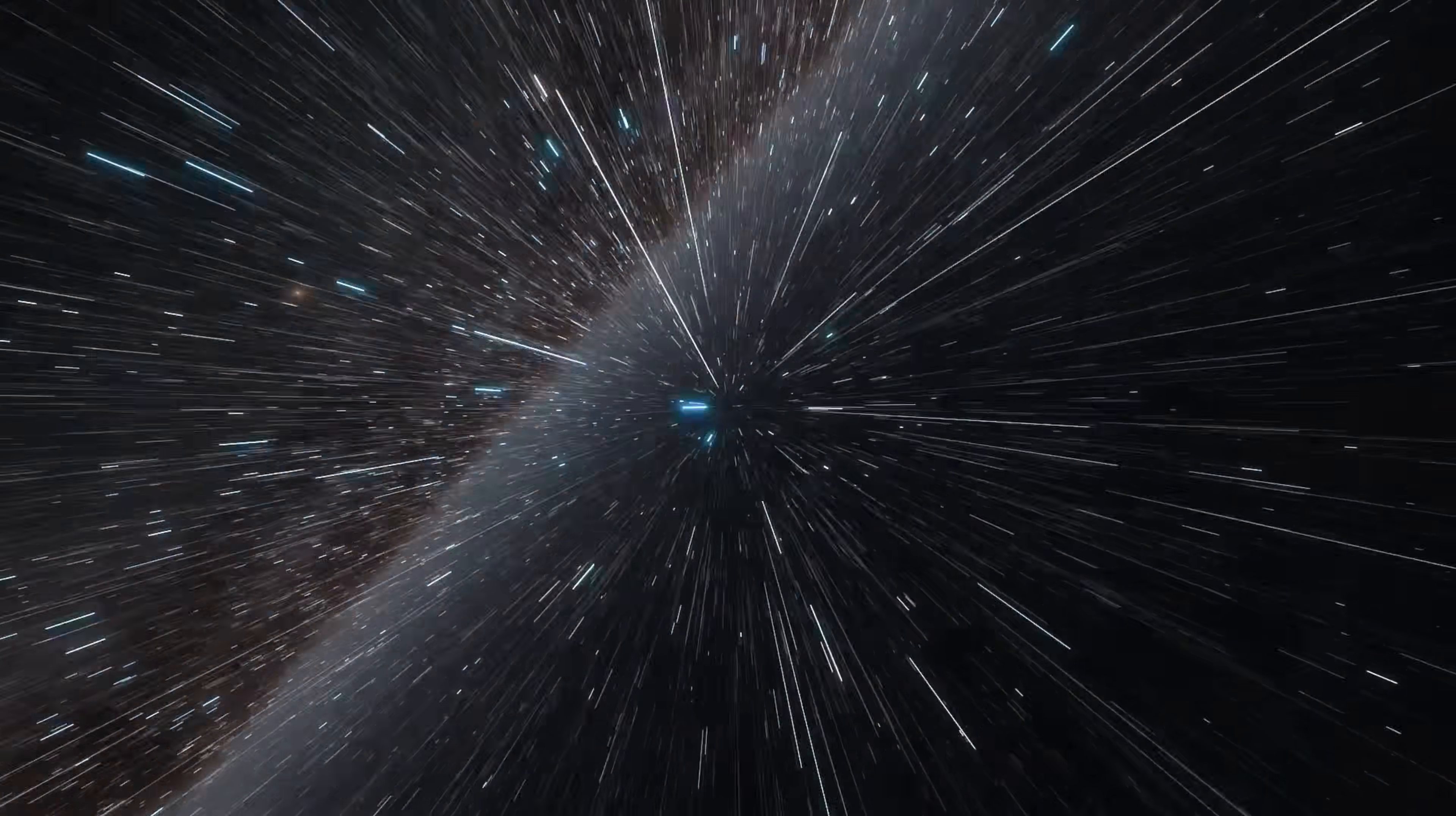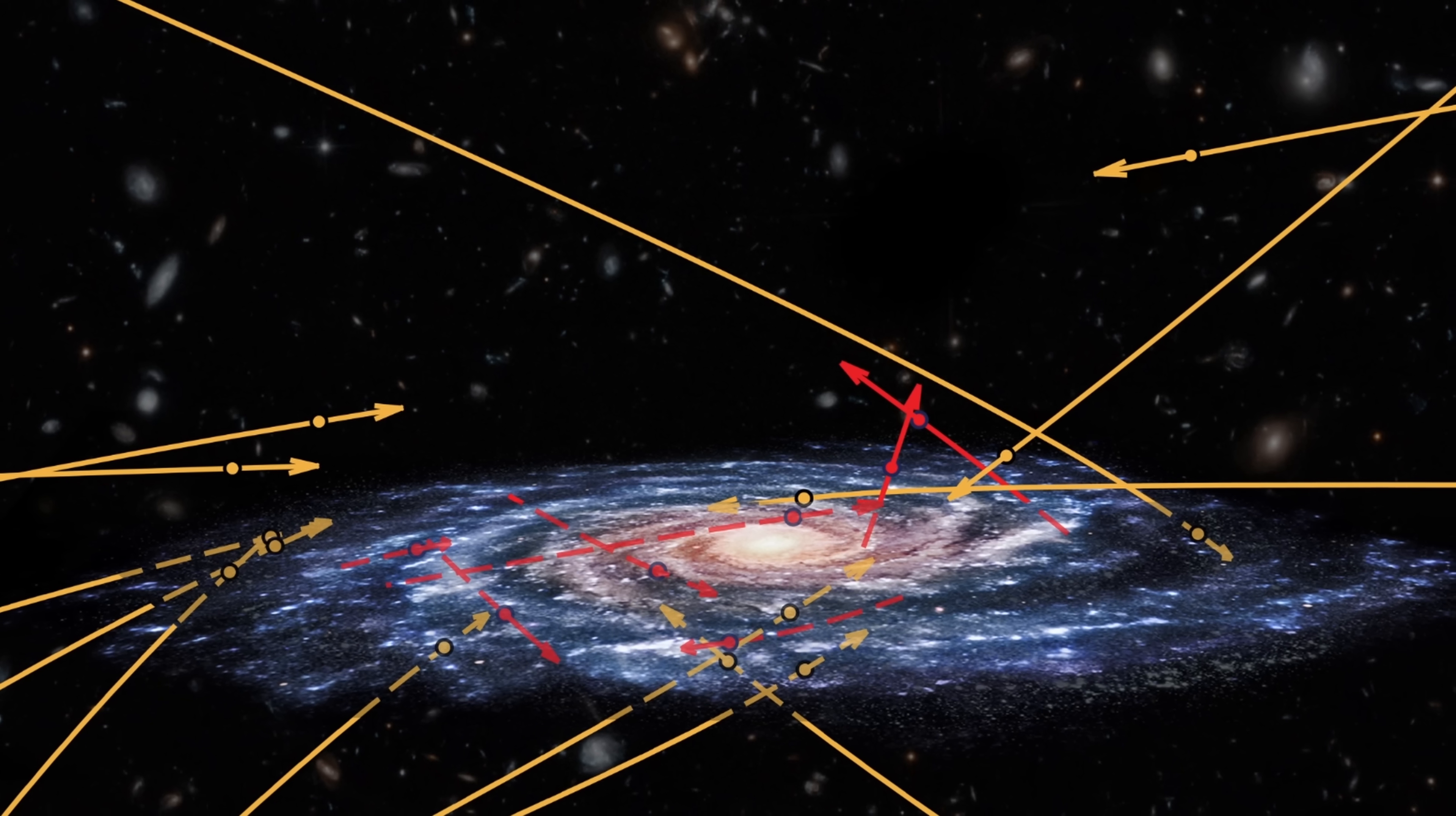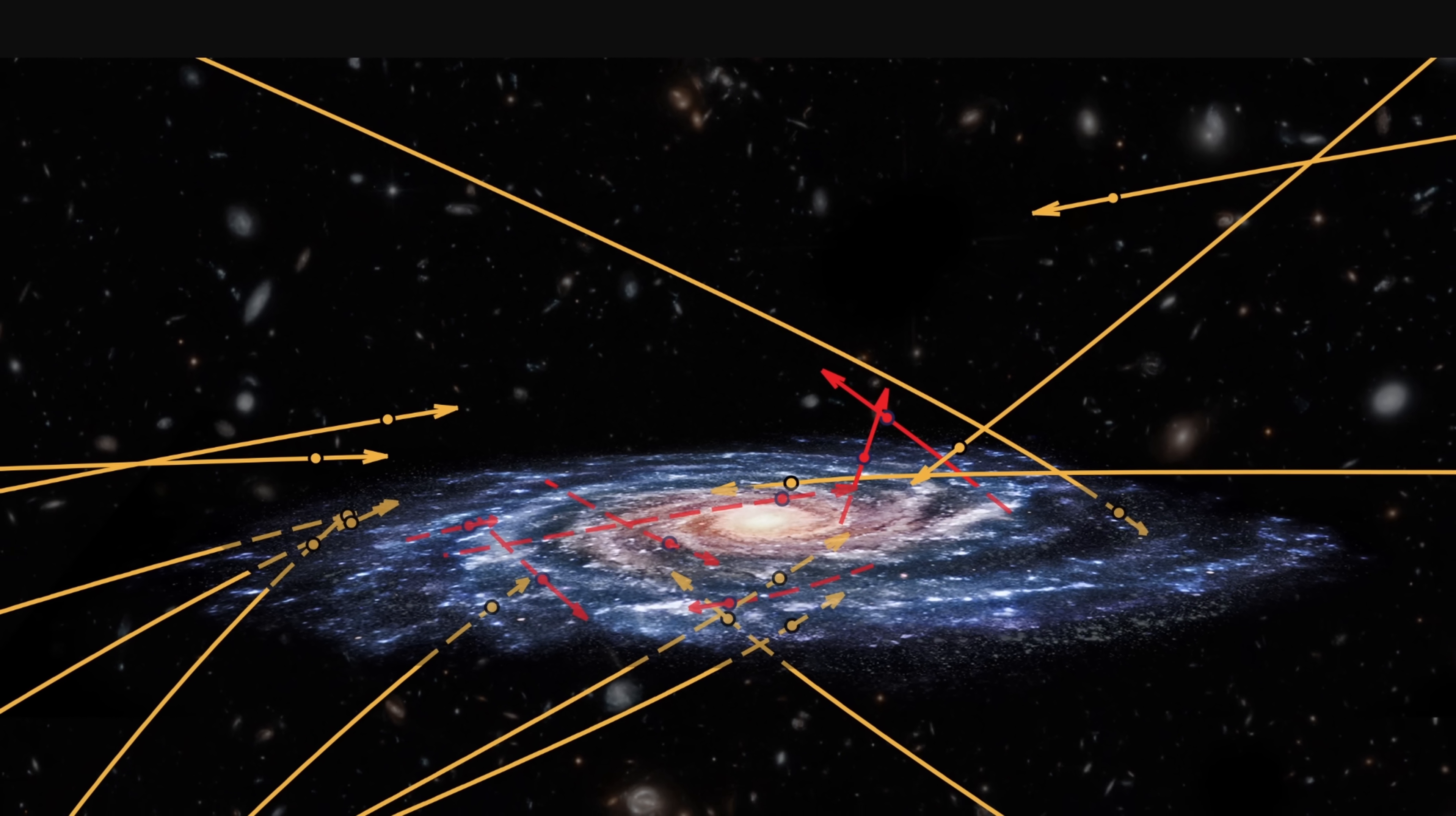The stars referred to as hypervelocity stars, the fastest moving stars discovered in the Milky Way so far. Stars whose velocities are so high that they're actually going to be escaping the Milky Way as they're traveling across the galaxy.